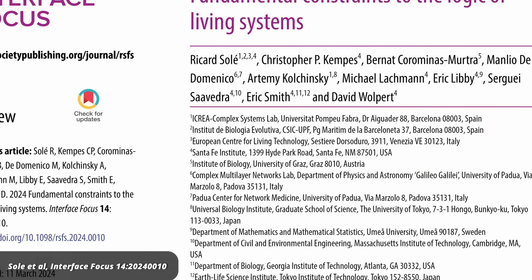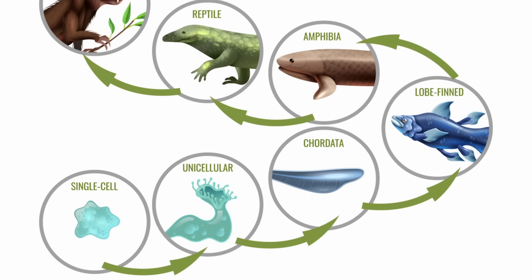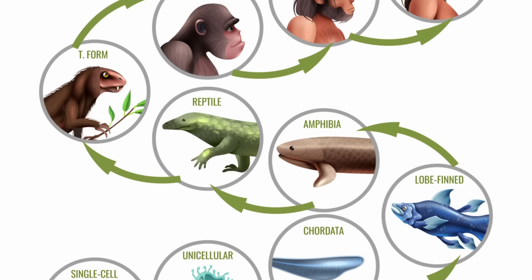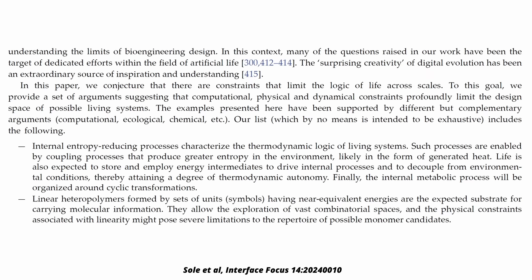Evolution seems a complicated and pretty random process, but in a recent paper, a group of scientists surprisingly says that if we could go back four billion years and start life on Earth all over again, the result might not be all that different to what it is today. Indeed, life all over the universe must follow similar rules. In their own words, computational, physical, and dynamical constraints profoundly limit the design space of possible living systems. One of the consequences, they say, is that we'll never get rid of parasites like viruses, because parasites are an inevitable consequence of evolution.